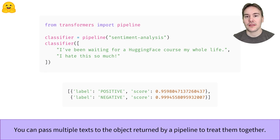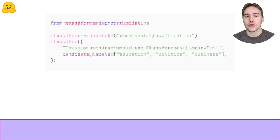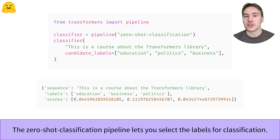The output is a list of individual results in the same order as the input text. Here we find the same label and score for the first text, and the second text is judged negative with a confidence of 99.9 percent. The zero-shot classification pipeline is a more general text classification pipeline.